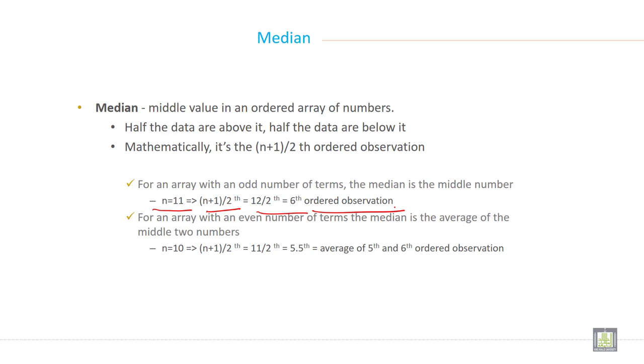For an array with an even number of terms, median is the average of the middle two numbers. This is important. Example, if you have 10 numbers in your data set, calculate (n+1)/2. So it is 11/2 and when you calculate this it is 5.5. So the fifth and sixth number of observation in your data set will be the median.